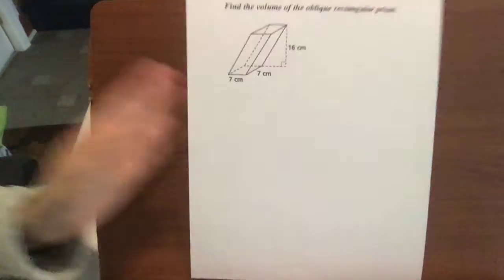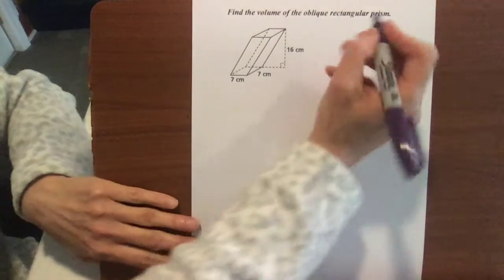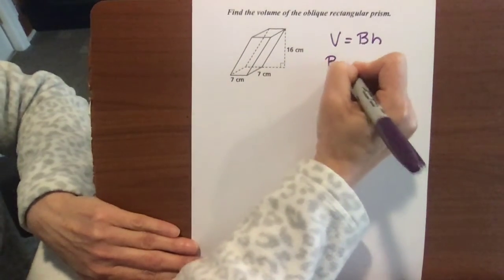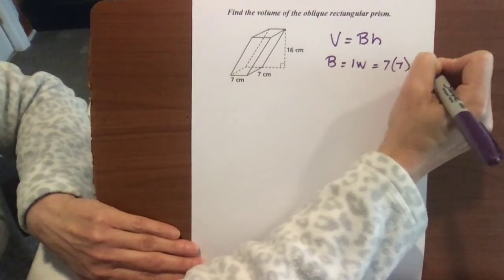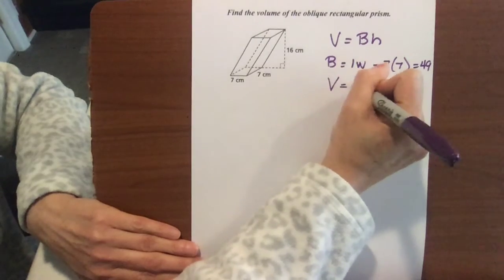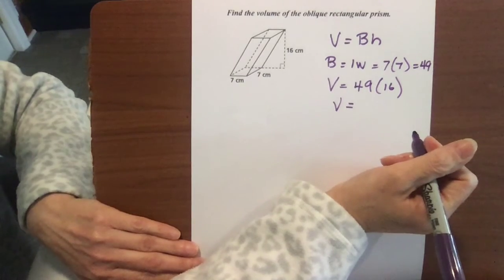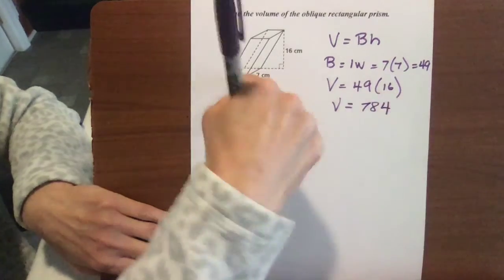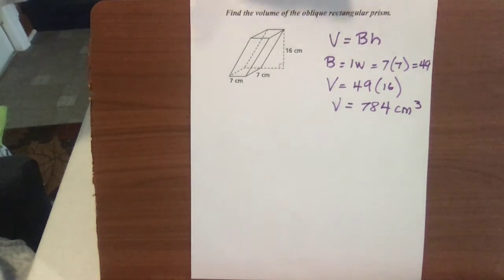What might be new is, oh my gosh, what do we do with that? It's leaning. So that's an oblique rectangular prism. Again, our volume is our base area times our height. Our base area is just length times width. It's a square in this case, so it's 7 times 7, so 49. Our volume then is 49 times our height of 16, and our volume is 16 times 49, 784, and our units are centimeters cubed. There's our volume.